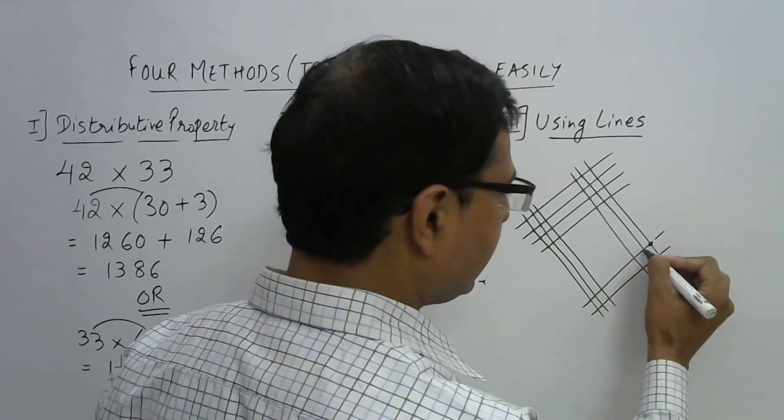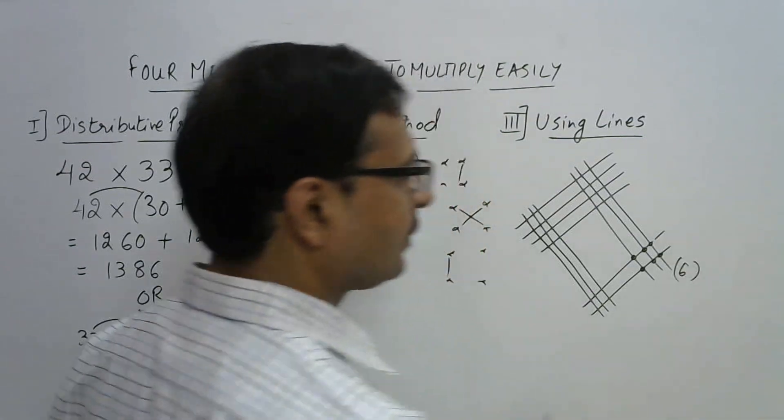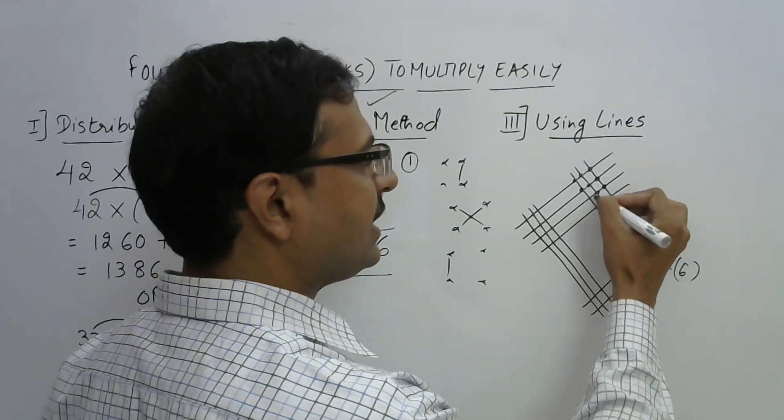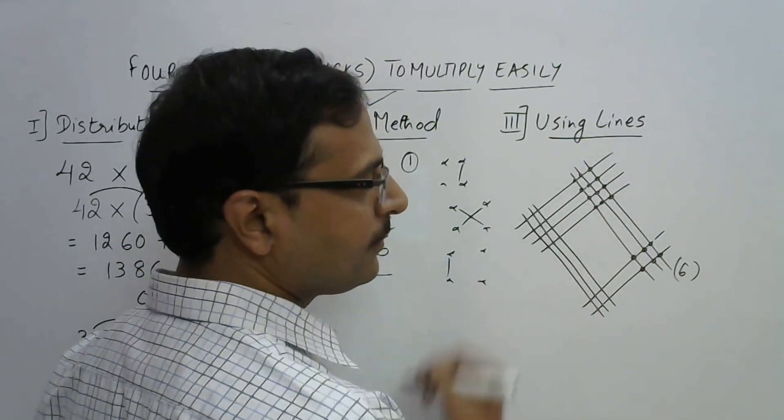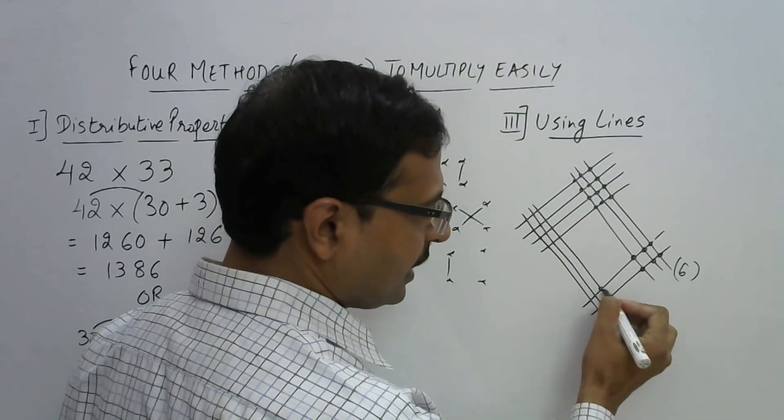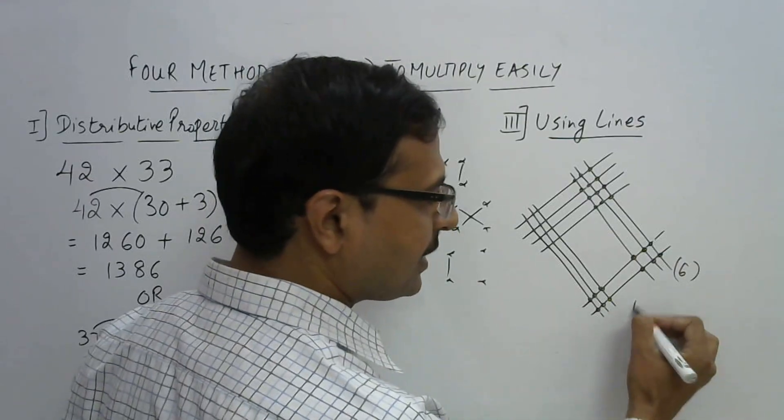Now count here 1, 2, 3, 4, 5, 6 points of intersection. Count here 1, 2, 3, 4, 5, 6, 7, 8, 9, 10, 11, 12 here. And under this we have to add here also. So 12, 13, 14, 15, 16, 17, and 18. So remember that 18.